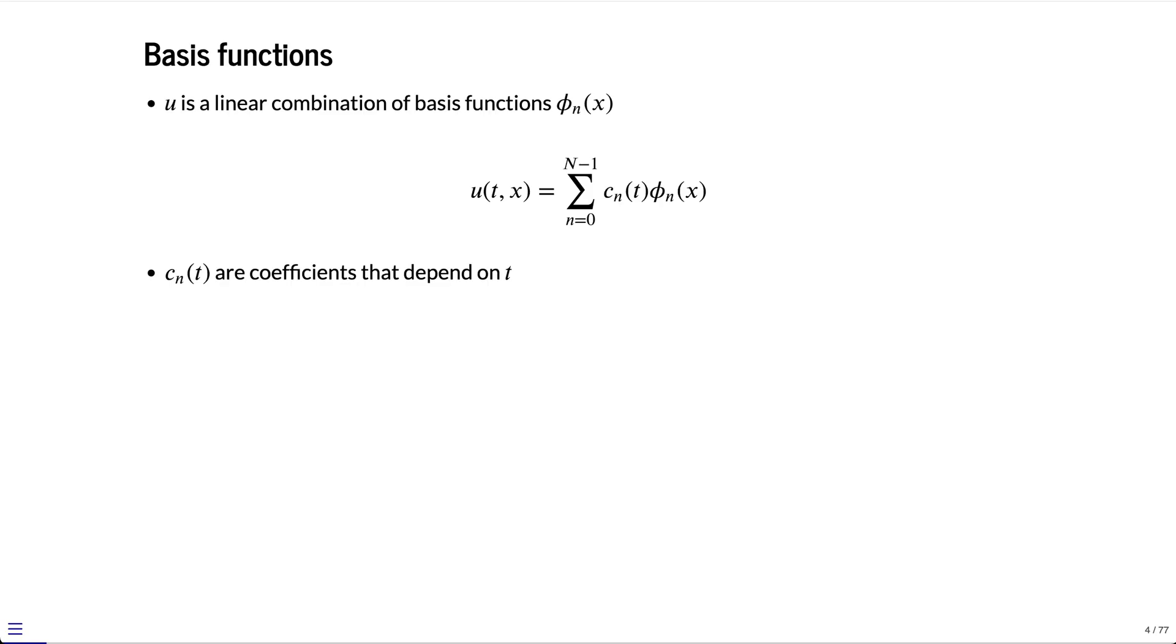In spectral methods, we're going to represent our function u of t and x as a linear combination of basis functions. Phi n are our basis functions, and these are functions only of space, while the multipliers cn of t are coefficients which can depend on time. We have a linear combination of these basis functions, where the cn are the coefficients of this linear combination, and we sum up over a finite number of these basis functions.